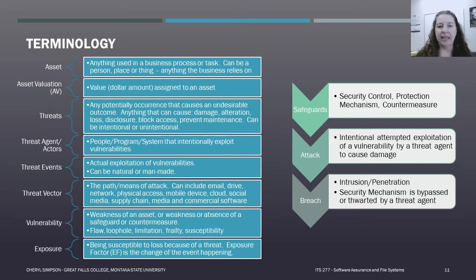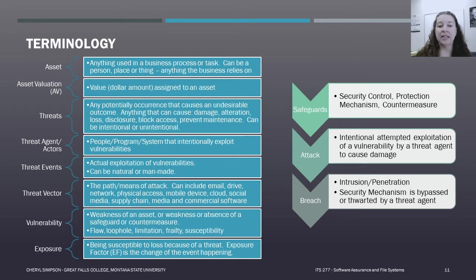The threat vector is the means of the attack. If you spilled coffee, the coffee is the means of the attack. If someone installed malware, the malware is the means. Vectors can include email, a drive, a network, physical access, mobile devices, cloud, social media, supply chains, media in general, and commercial software — any of these can carry out the threat event.